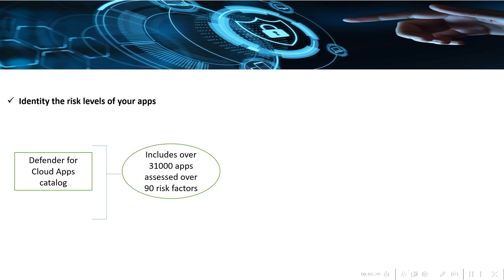Based on these scores, Defender for Cloud Apps lets you know how risky an app is that you have discovered from either firewall logs or from Defender for Endpoint on your Windows 10 machine. Scoring is based on 90 risk factors that might affect your environment.